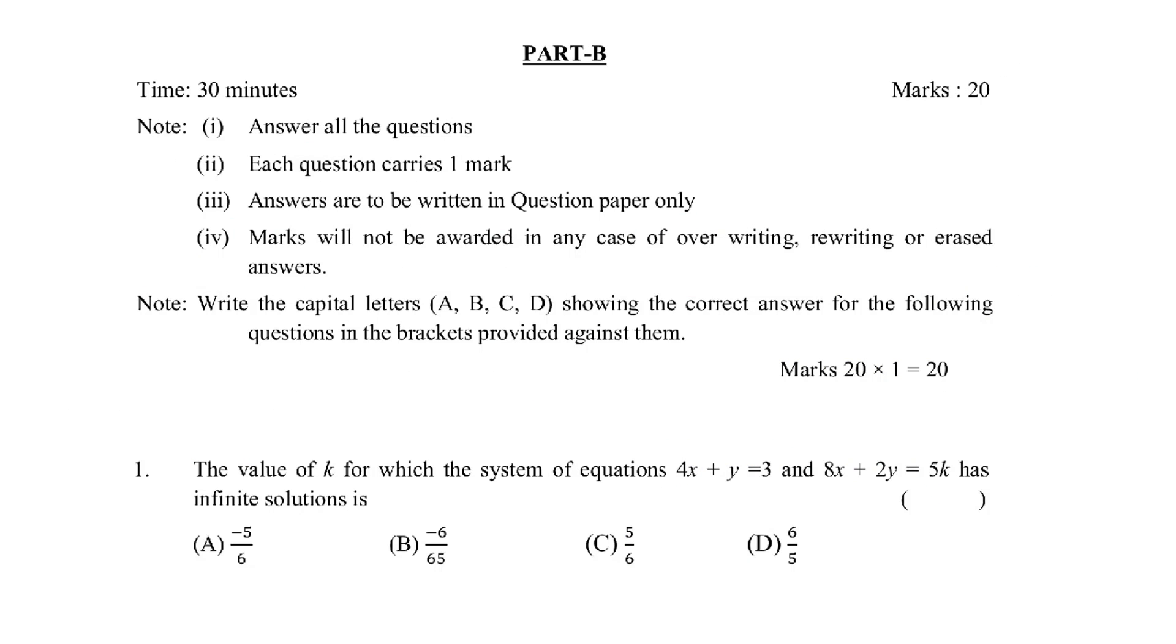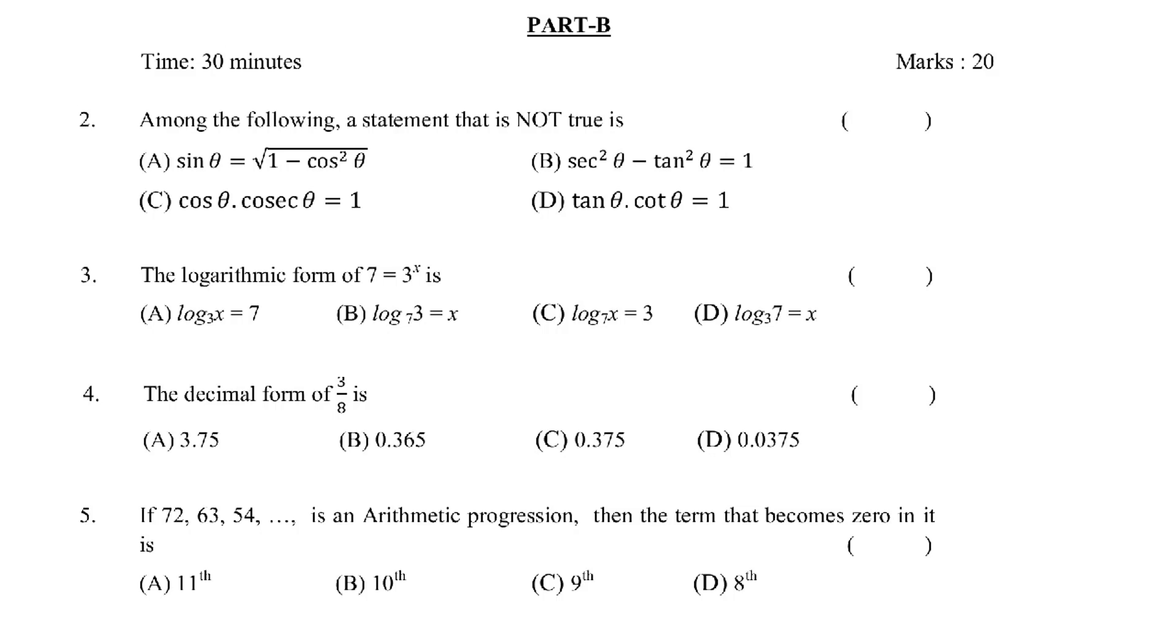Part B, 20 marks, 20 questions. Total time is 30 minutes and you have to write this in bit paper. A, B, C, D, a choice, right choice, select. First question is system of equations, pair of linear equations in two variables chapter. Second question is tan, sin, cos, trigonometry chapter. Logarithm, this is real numbers chapter. Decimal form, real numbers chapter. This is arithmetic progression, progressions chapter.